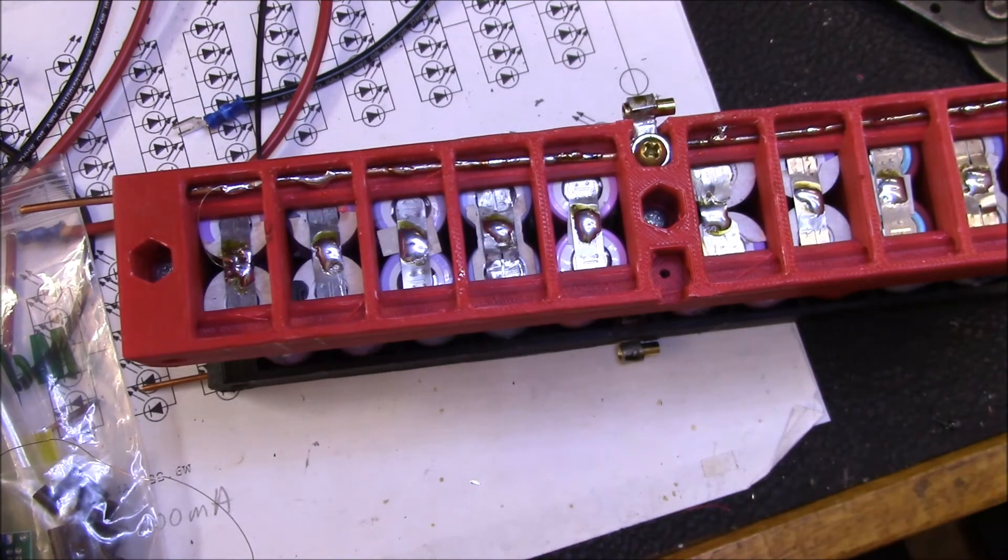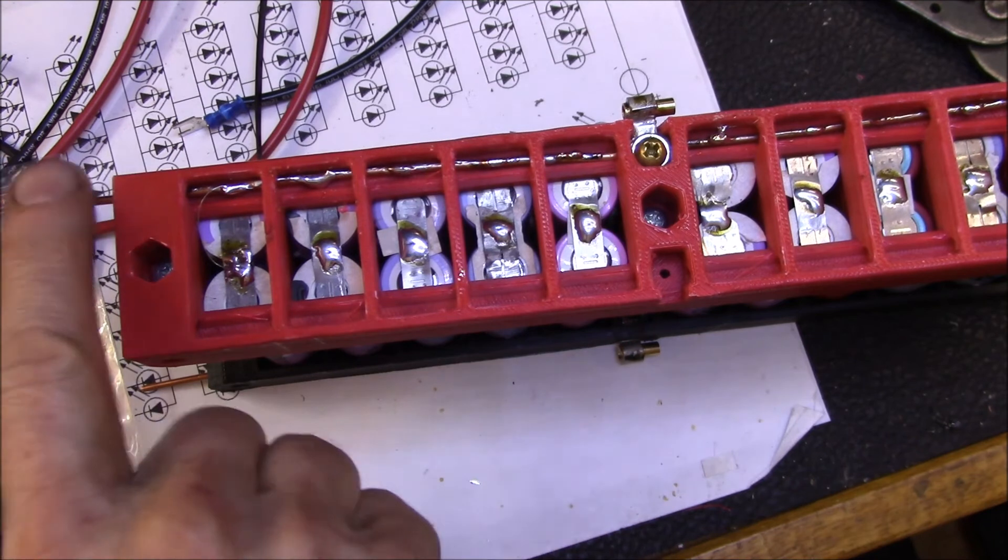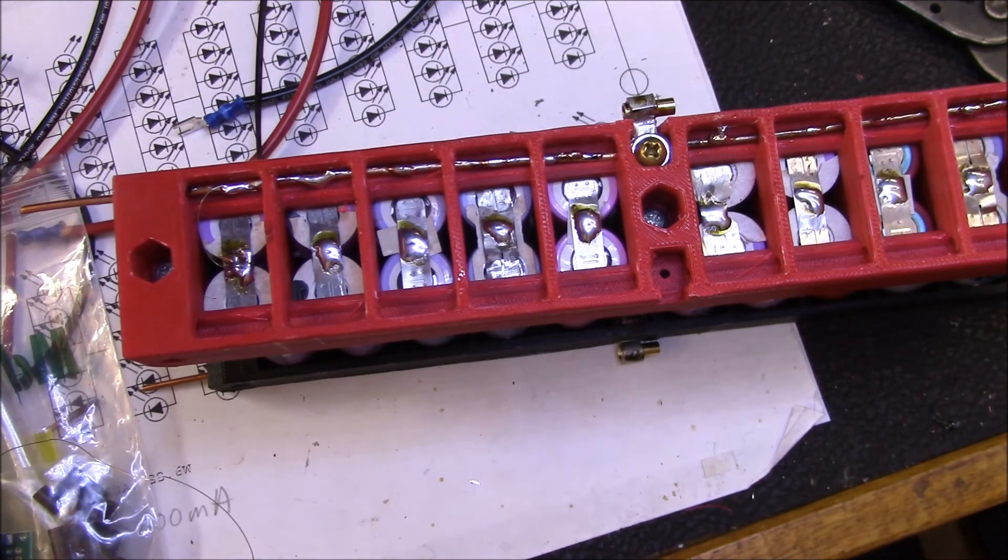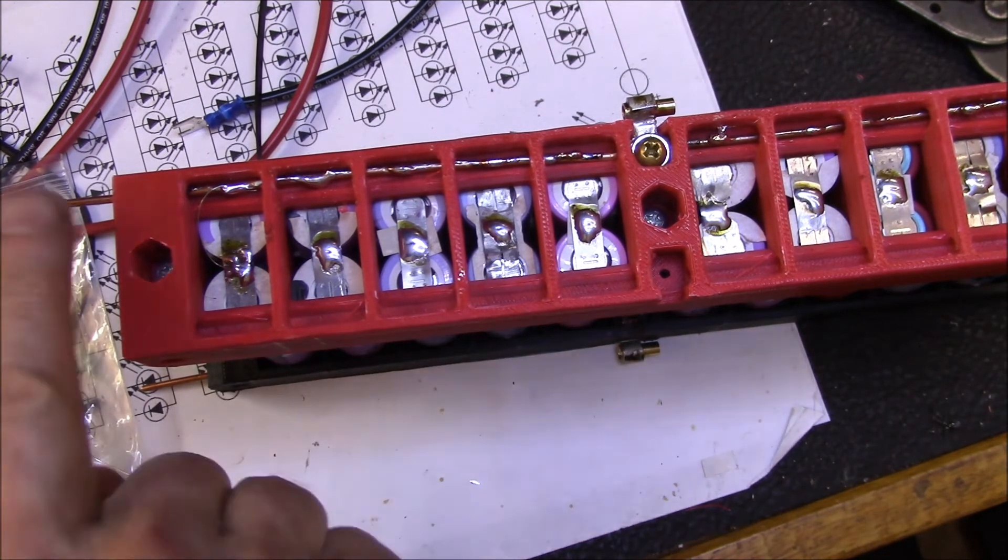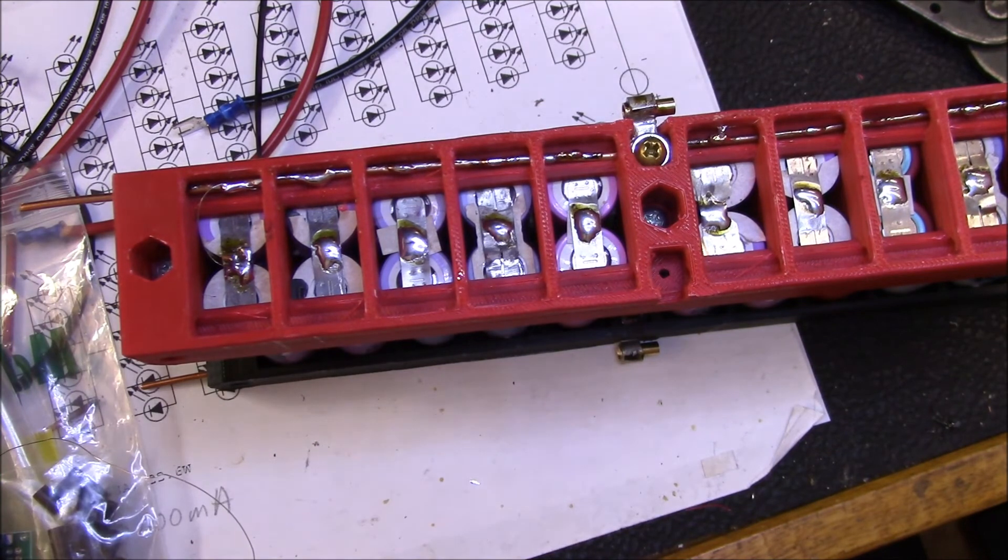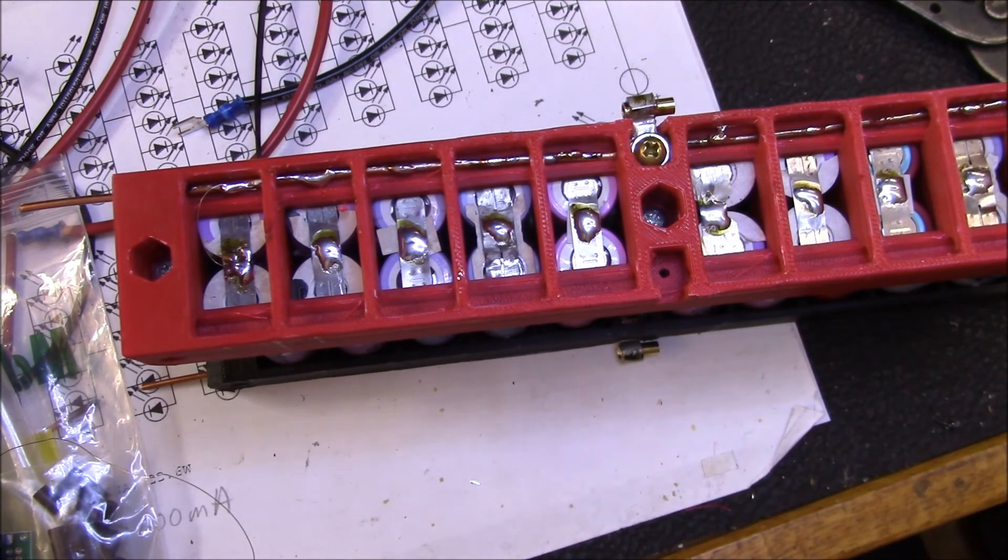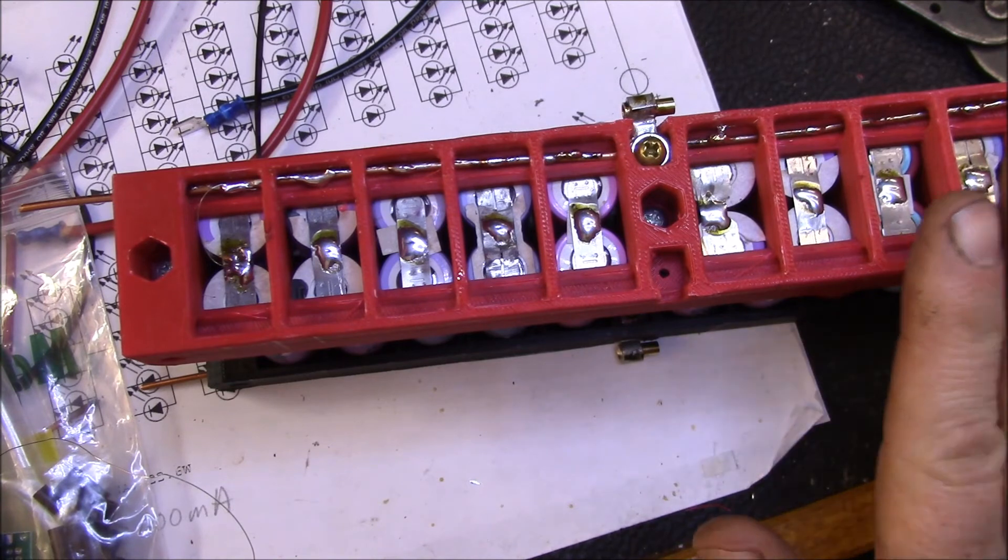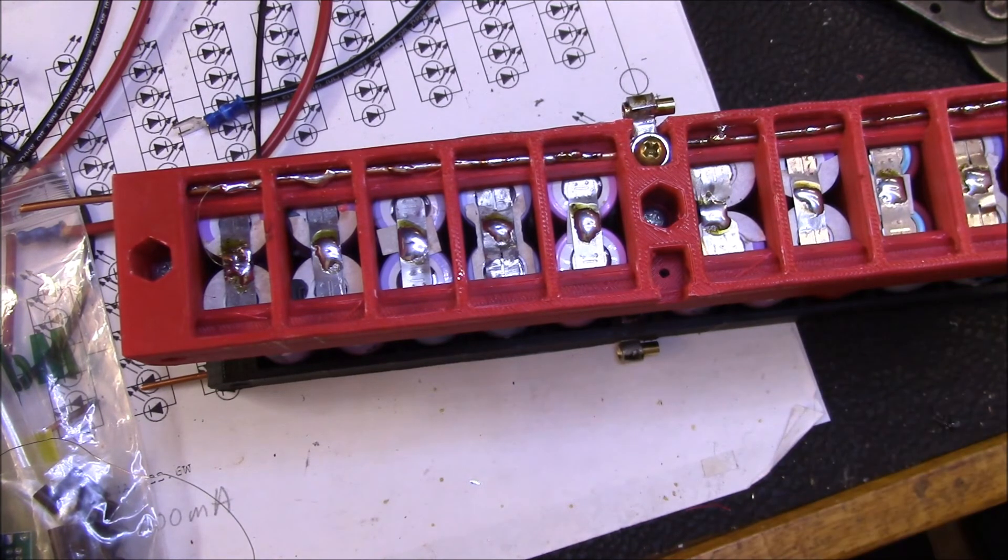Then I put my quick connect terminals on the end, cut these to length, crimp on the terminals, and then I bend them down and we have another pack ready to go. I'll show you what all four of them look like when I get to that point and we can take a look at putting four of these together into a battery.